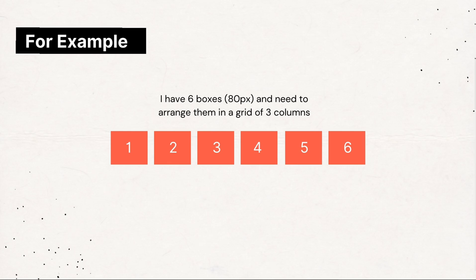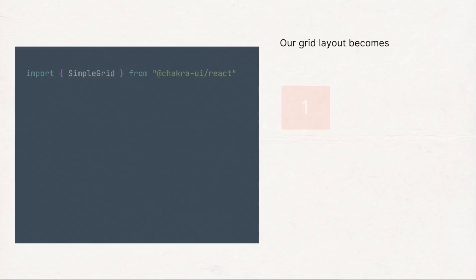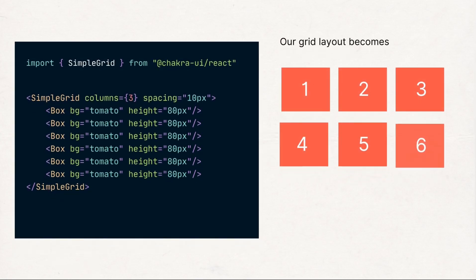Let's try to visualize this. Let's say you want to build a page layout with six items arranged in three columns — the Simple Grid comes in handy. Wrap Simple Grid around the items, pass the columns prop and set the value to three. With the spacing prop, we can set the space between the items to 10 pixels, and that's it.